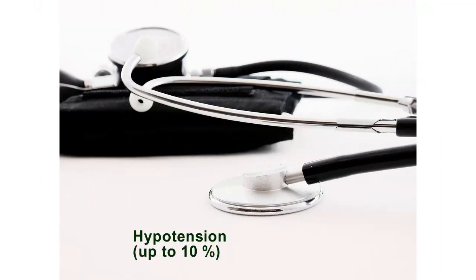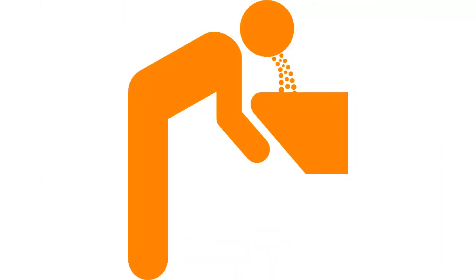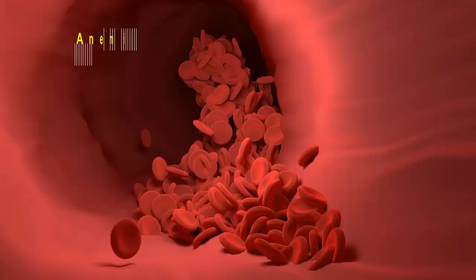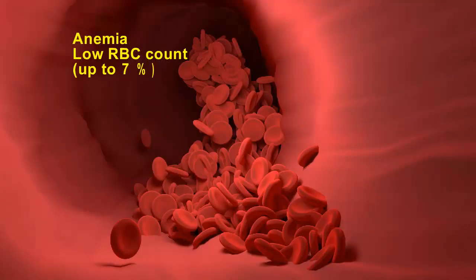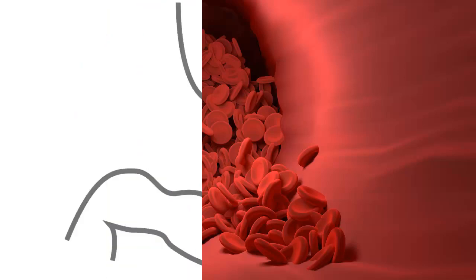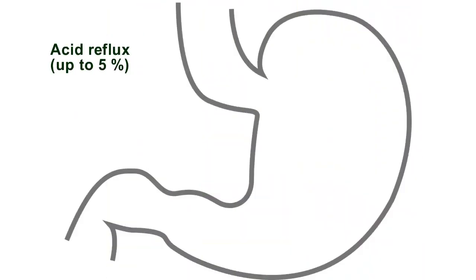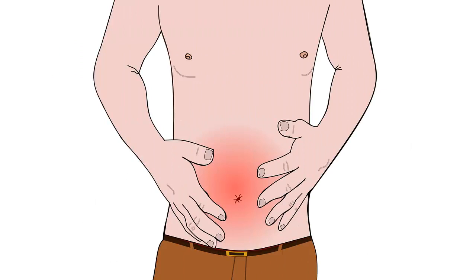Hypotension: up to 10%. Vomiting: up to 10%. Anemia — low RBC count: up to 7%. Acid reflux: up to 5%. Constipation: up to 5%.